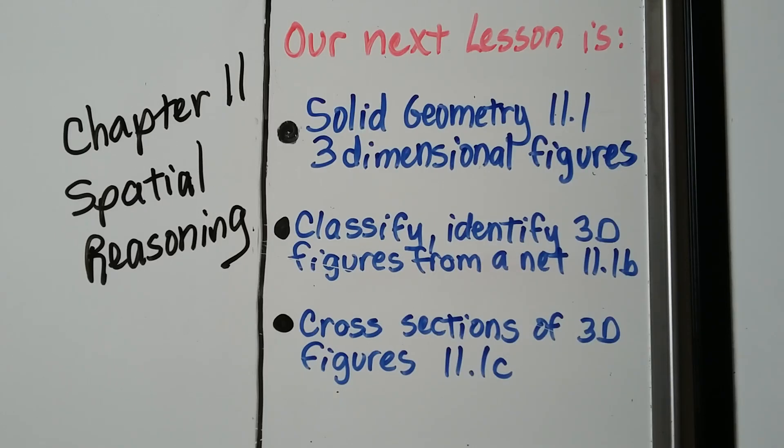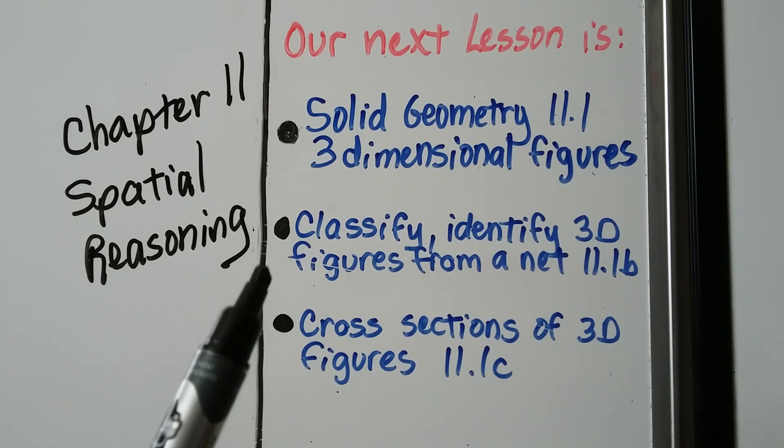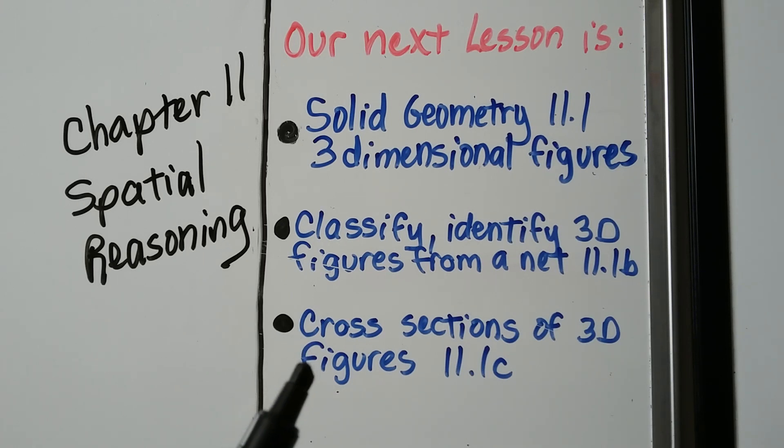So that's it for chapter ten. We're going to move on to chapter eleven, which is all about spatial reasoning. I'm going to start talking about solid geometry and three dimensional figures in eleven point one. The second part of that lesson is classify and identify three dimensional figures from a net. Then we're going to finish eleven point one with cross sections of three dimensional figures.